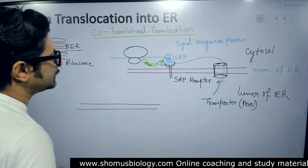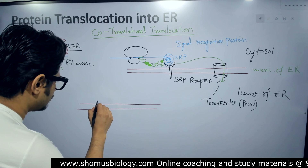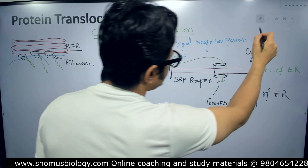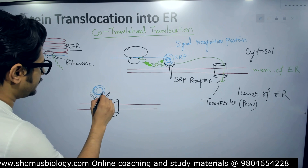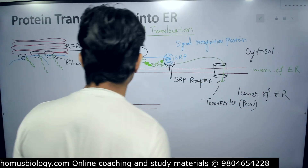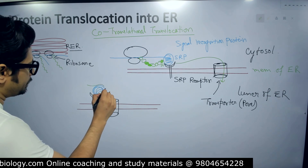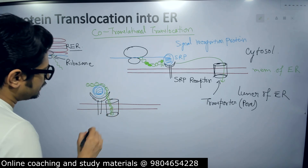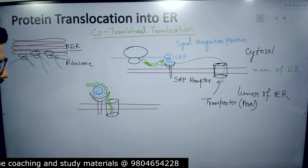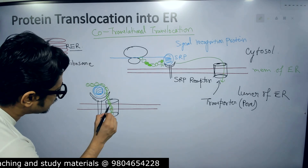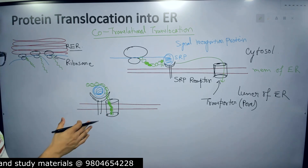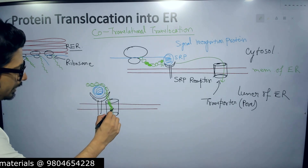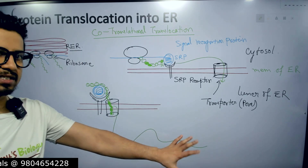Let me draw it again. We have the SRP connected to it, and the polypeptide chain connected to it as well. The polypeptide will be pulled inside the ER lumen. The signal sequence enters first and remains there, and then the pulling continues. The whole polypeptide chain is dragged inside the ER lumen.